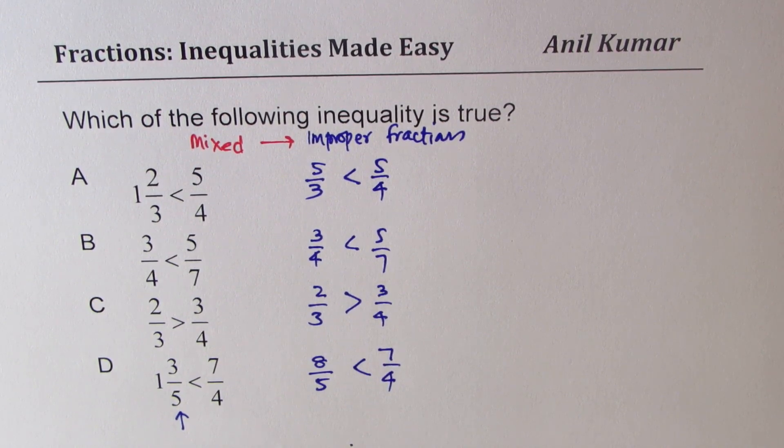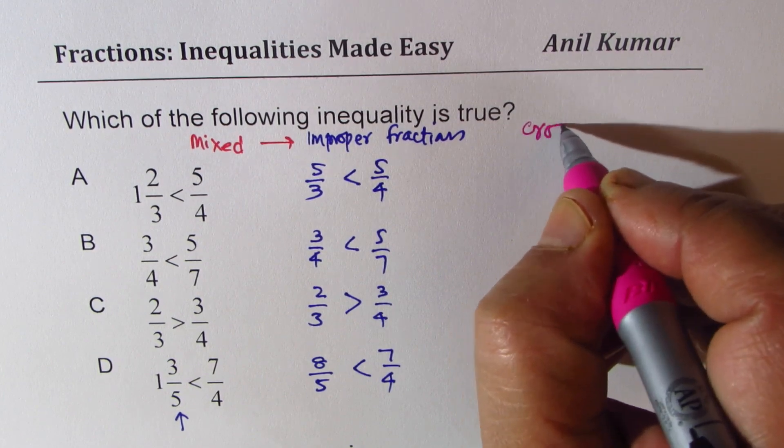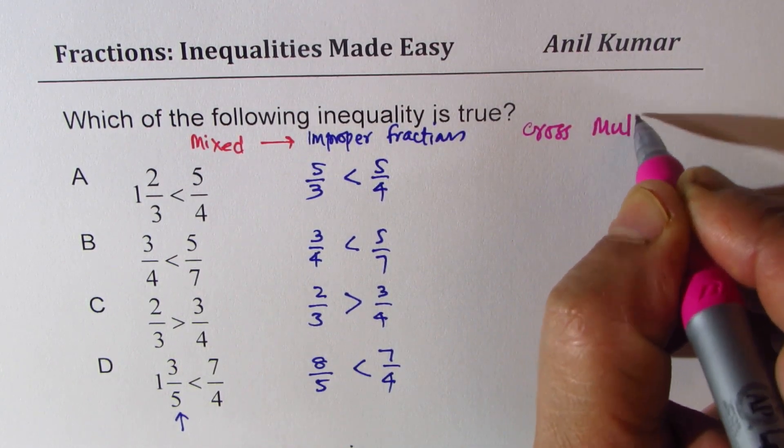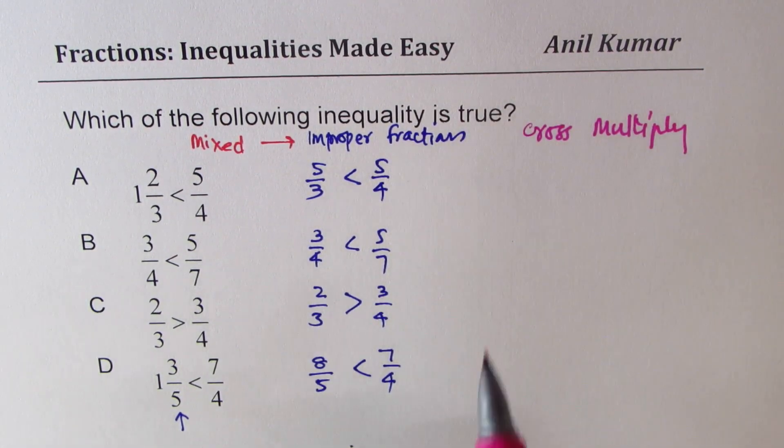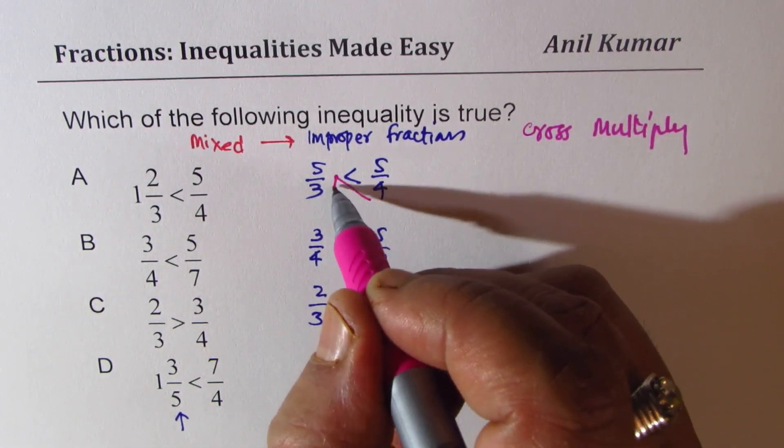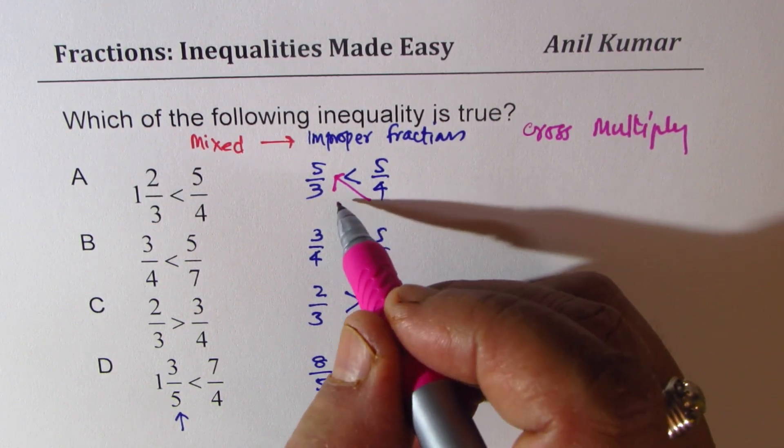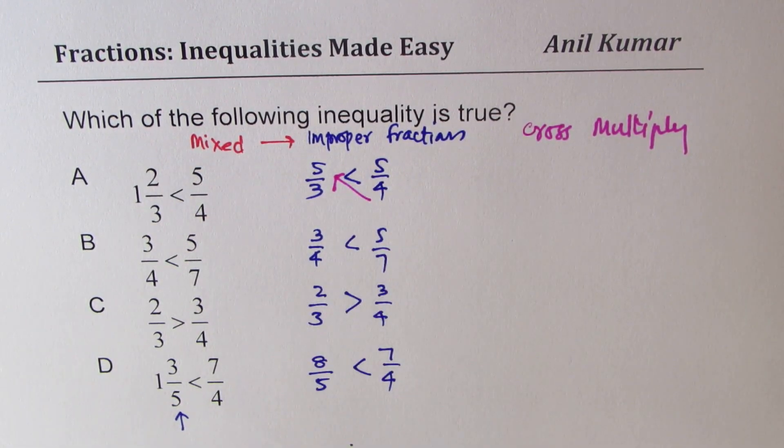Now the second step to check is cross multiply. So cross multiply means you times these numbers. You times this by that and times 3 by 5.